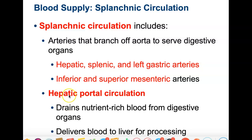I also want you to remember the hepatic portal circulation. Anything draining from the large and small intestines, from the stomach, and from the spleen — all of that venous blood — drains into the hepatic portal and is processed by the liver before being put back into the inferior vena cava.